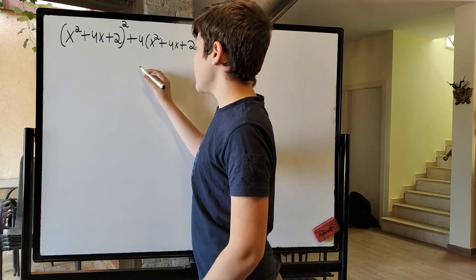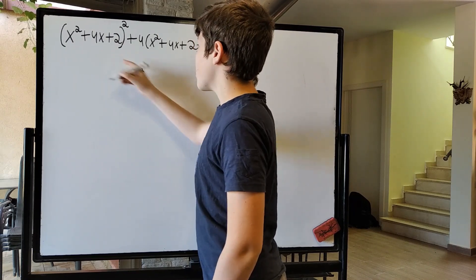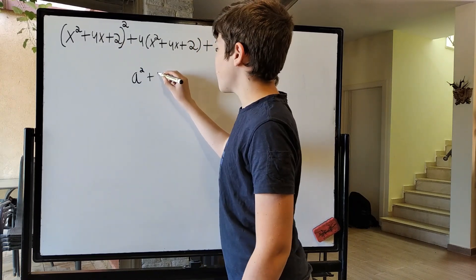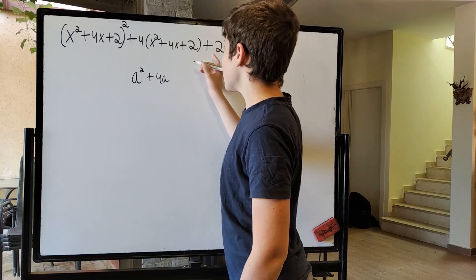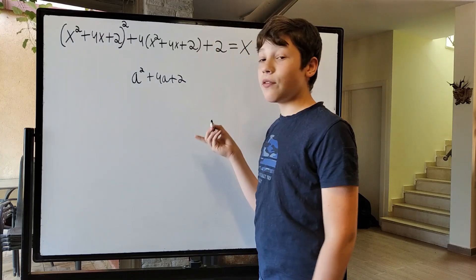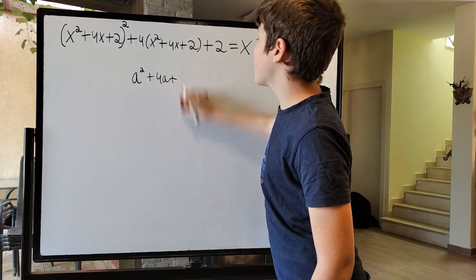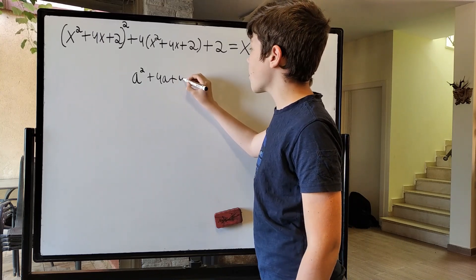...then we can see that we have a squared, which is this, plus 4a, which is this, and the final plus 2. And if we add just another 2, this plus 2 becomes a plus 4...